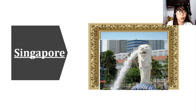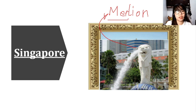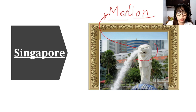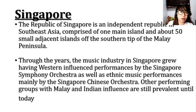Now let's move on to Singapore. Singapore's symbol is the Merlion — 'mer' meaning ocean and 'lion' meaning lion — so it has the head of a lion and the body of a fish. Singaporeans believe the Merlion is lucky, and it serves as their national symbol. The Republic of Singapore is an independent republic comprised of one main island and about 50 small adjacent islands at the southern tip of the Malay Peninsula.